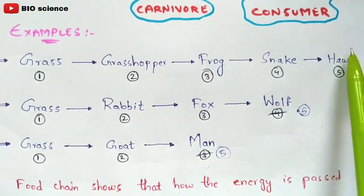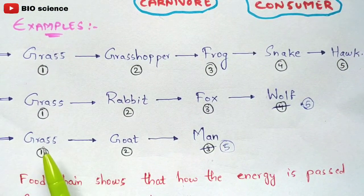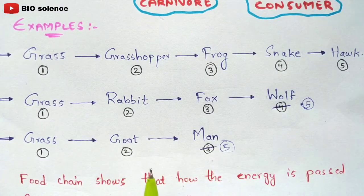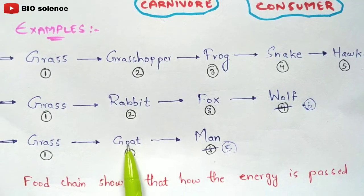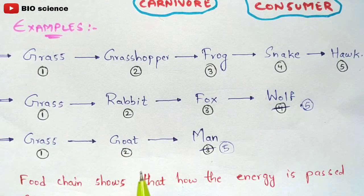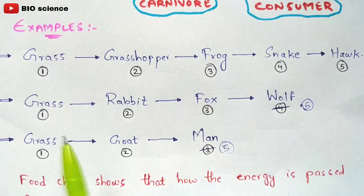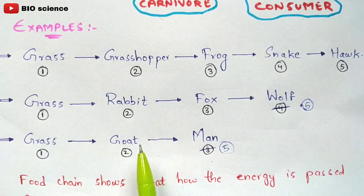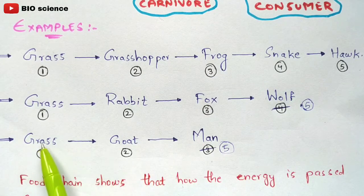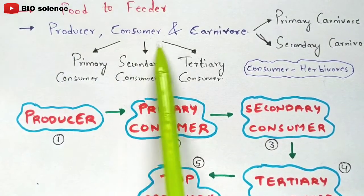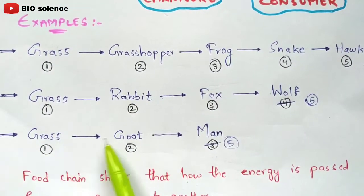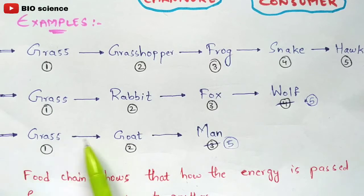The third example is: grass, goat, and man. Grass is the producer, goat is the primary consumer, and man is the top carnivore. In this case, you cannot see any sub-trophic levels because there are only three trophic levels present: producer, consumer, and carnivore. There are no sub-trophic levels in this example.